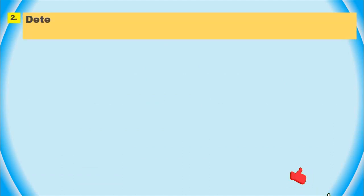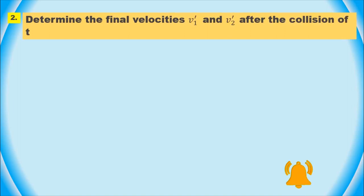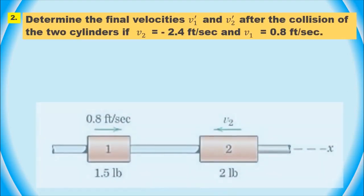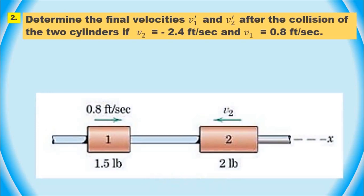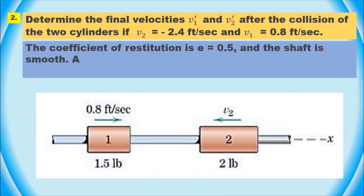Hello and welcome to our tutorial on determining the final velocities of two cylinders after a collision. In this tutorial, we will be working through a problem where two cylinders with different masses, velocities, and a coefficient of restitution collide along a smooth shaft. We will also be calculating the percent of the original energy lost during the impact. Let's start by defining some key terms and variables.